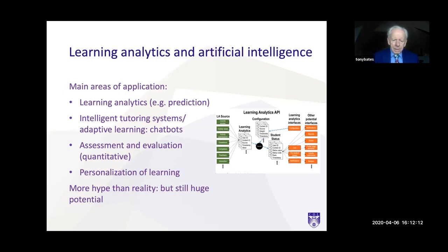Other applications include intelligent tutoring systems and adaptive learning, where if you don't learn the first time it reroutes you back again, or the use of chatbots to go through online discussions and provide advice when people have misunderstandings. There's also assessment and evaluation, but it's nearly all quantitative testing — comprehension and memorization — and personalization of learning, where if you're following a track and finding it difficult it will redirect you to another track. Looking at all the research in this area, I found more hype than reality.